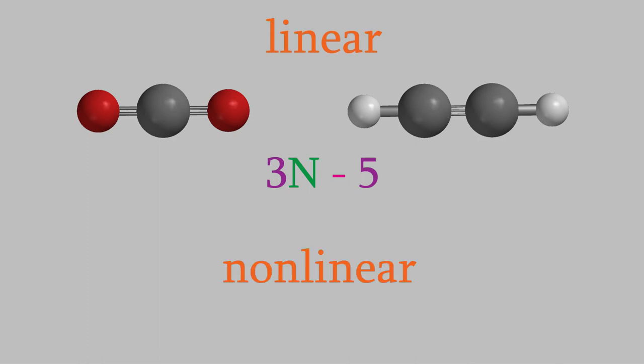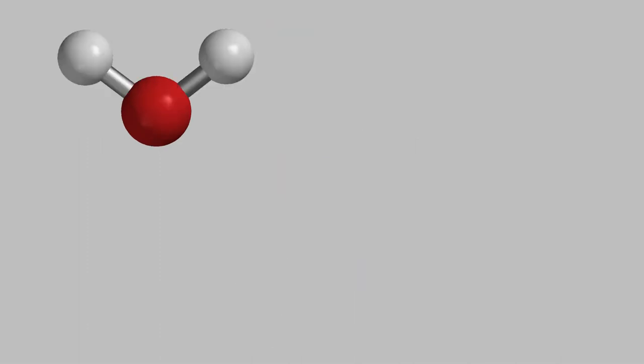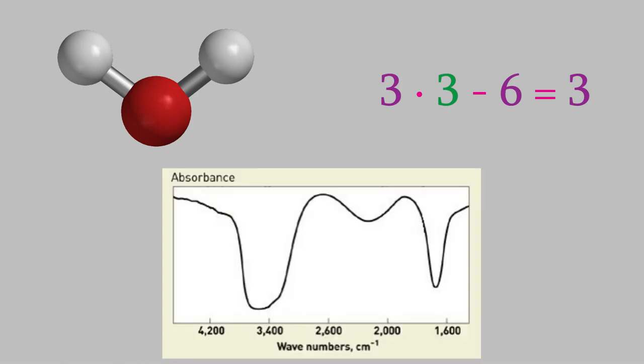For nonlinear molecules, the number of vibrations is 3n minus 6. For example, if we have a water molecule there are three atoms, so the number of vibrations is 3 times 3 minus 6, which gives us a total of 3. So there are three vibrations possible in a water molecule, and if we take an infrared spectrum of water we can see these vibrations as three peaks in the spectrum. We'll talk more about what exactly those three vibrations are a little later in the video.